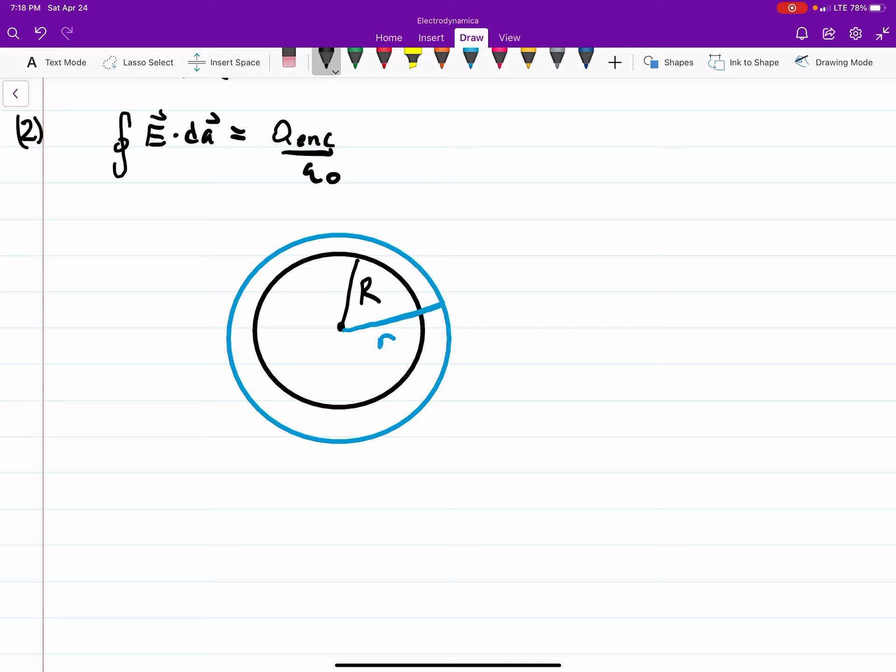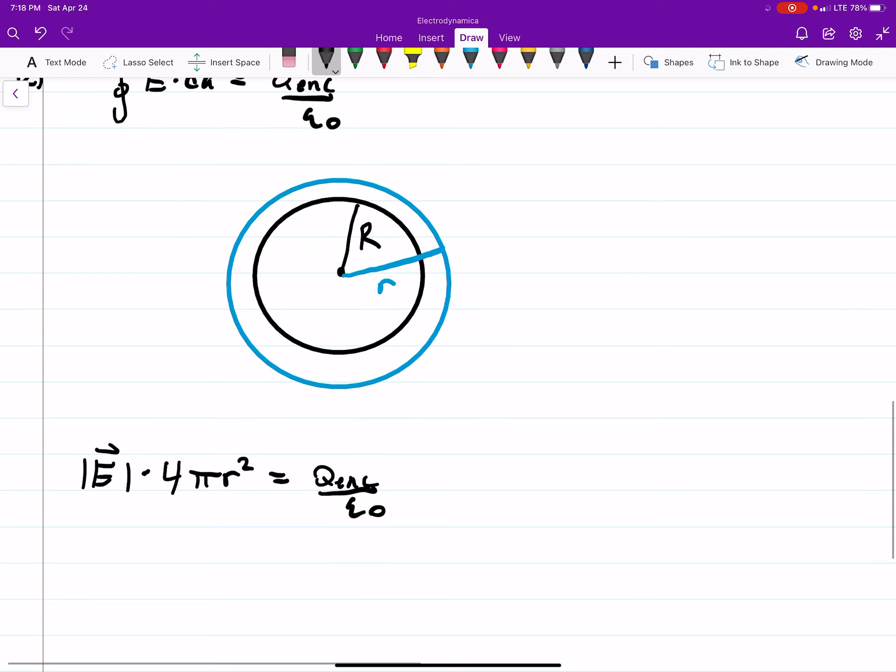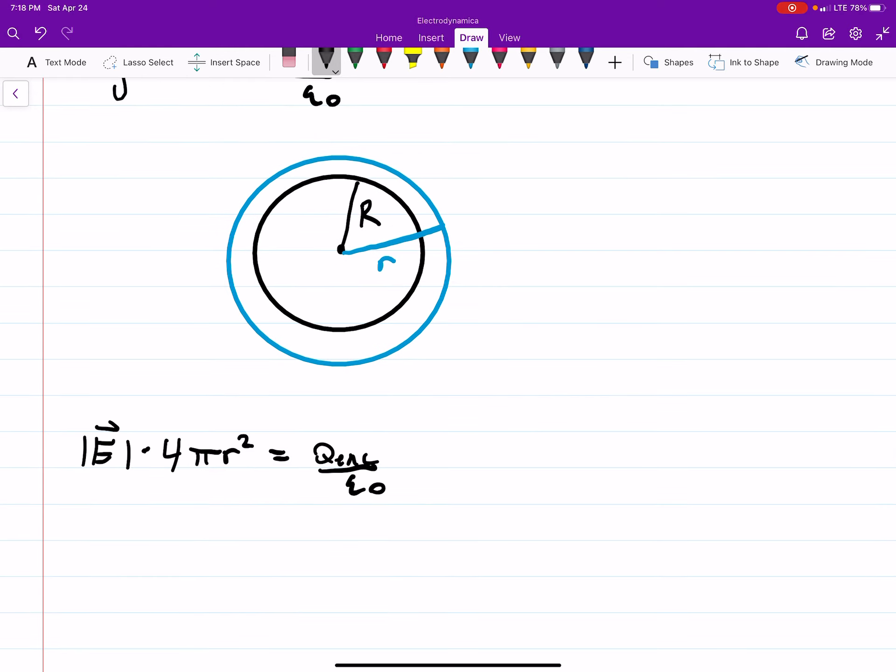So on the left-hand side, we're going to get the magnitude of your E-field times 4 pi r squared equals Q enclosed divided by epsilon naught. If we multiply both sides by epsilon naught, we can see the enclosed charge, which is your charge Q, is the magnitude of your E-field times 4 pi r squared times epsilon naught.